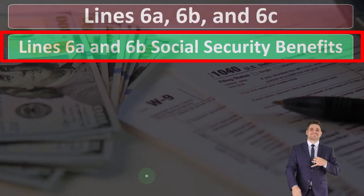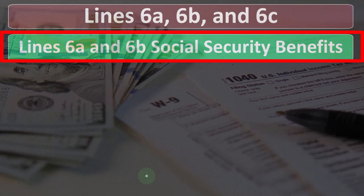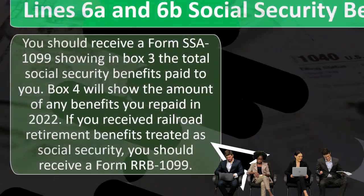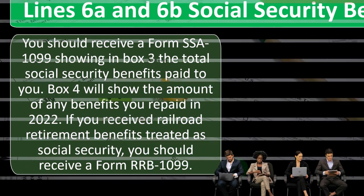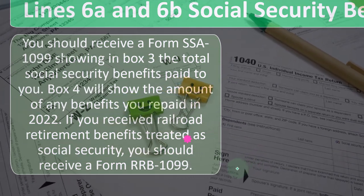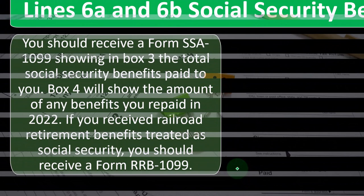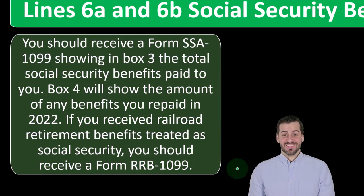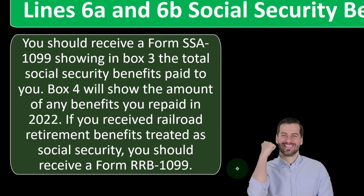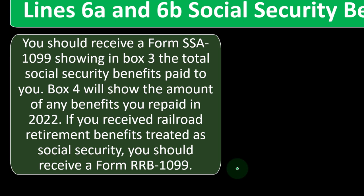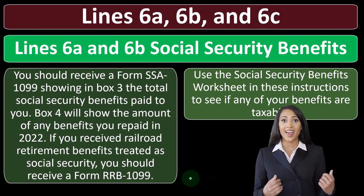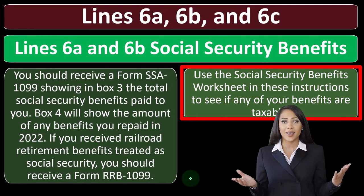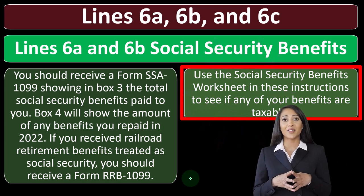Lines 6A, 6B, and 6C cover Social Security benefits. You should receive a Form SSA-1099 — a 1099-type form indicating this might be reportable income. Box 3 shows total Social Security benefits paid to you; Box 4 shows benefits repaid in 2022. If you received railroad retirement benefits treated as Social Security, you should receive Form RRB-1099. Use the Social Security Benefits Worksheet in the instructions to see if any benefits are taxable.